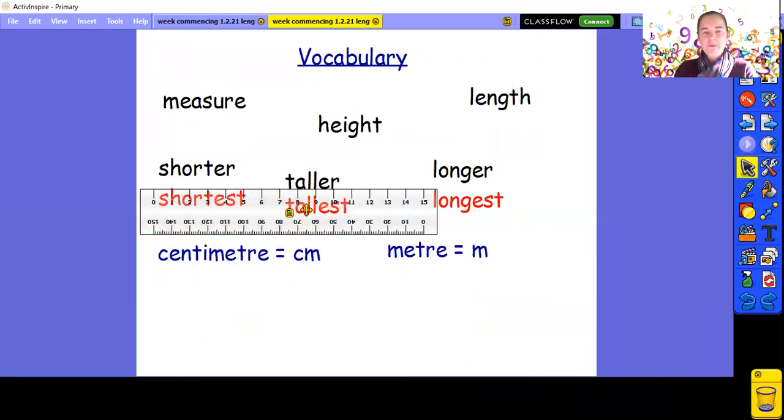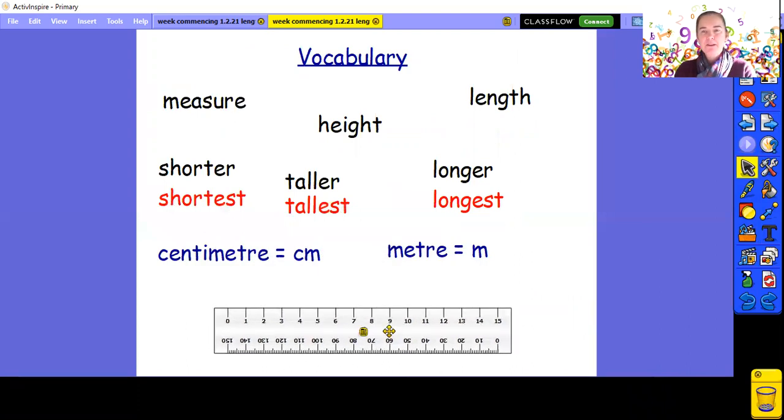Here's some of our vocabulary we might need to use when we are talking about measuring length and height. Let's read them together. Measure, height, length, shorter, shortest, taller, tallest, longer, longest, centimetre. And then there's the letters we use to record centimetre, a C and an M. Then we've got the word metre. And when we record how many metres, we just use the letter M. This was our ruler, which had centimetres on it. And I mentioned that in school, we also have what we call a metre stick. And we're going to talk about that now.